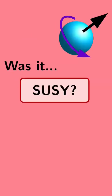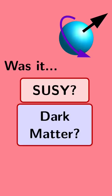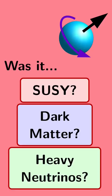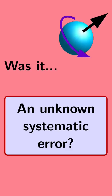Was it supersymmetry? Dark matter? New heavy neutrinos? An unknown systematic error?